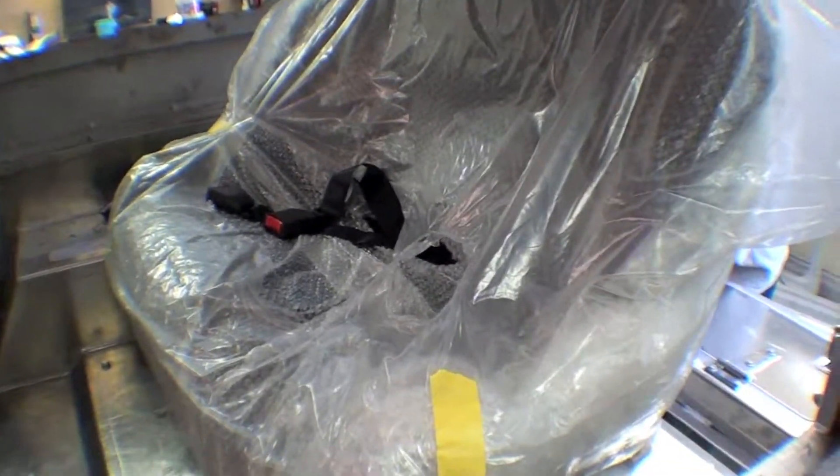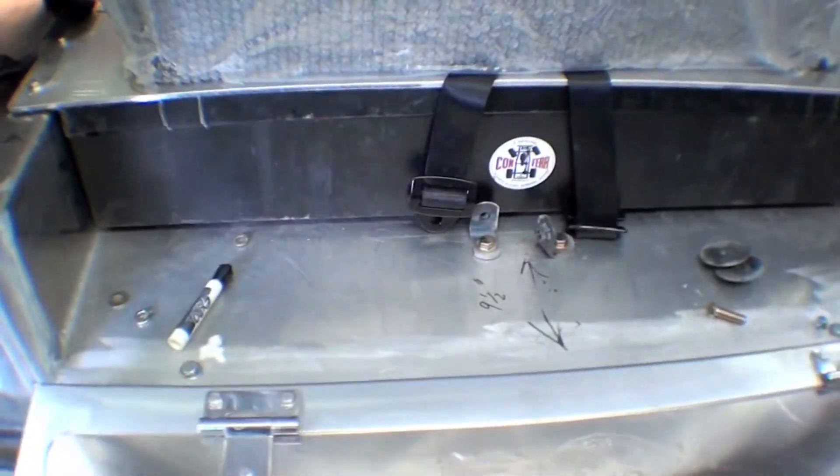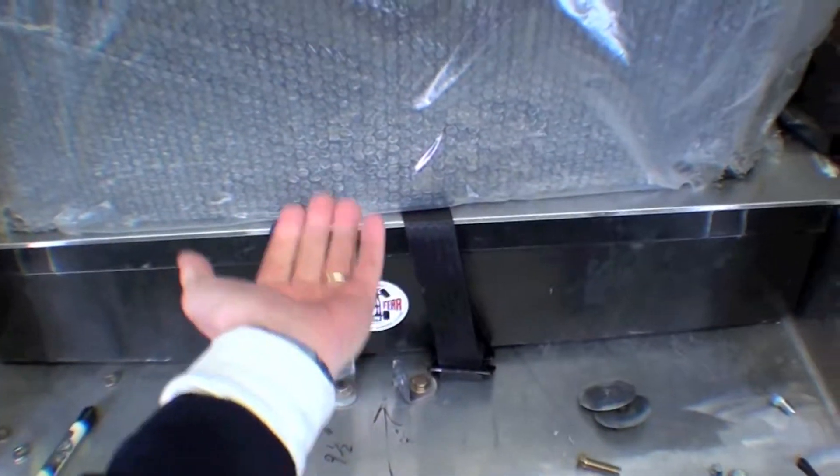The lap belts will be in the back. There are two, and what we're going to be doing is fastening them to the floor in the back here. They'll come through and there's a pass-through right in the middle of the seat.